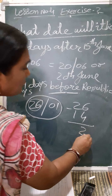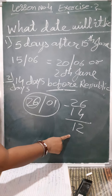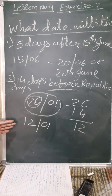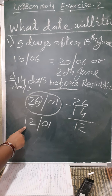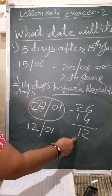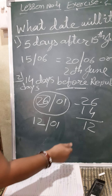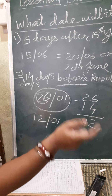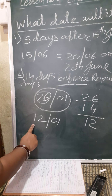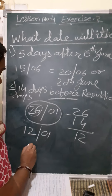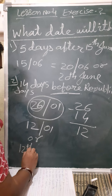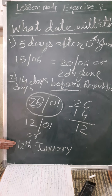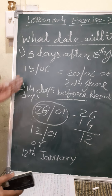Now 6 minus 4 is 2, 2 minus 1 is 1, so the date that came is 12th — yes, 12th January. Now understood: 14 days before Republic Day is 12th January. If you are not sure, add again to check: 4 plus 2 is 6, 1 plus 1 is 2, so 26th came — it means your answer is correct. You can write 12th January.